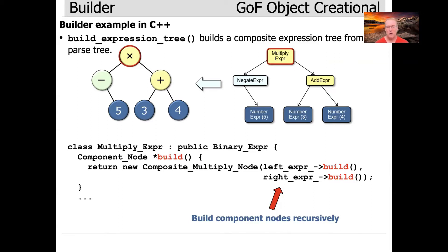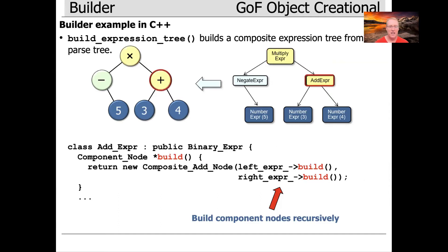So we have left expert arrow build and right expert arrow build. Both of those will recursively go down through the parse tree calling build, which then calls other methods that will build the corresponding expression tree elements. So we're starting at the root and now we're going to descend down one level to the right child.